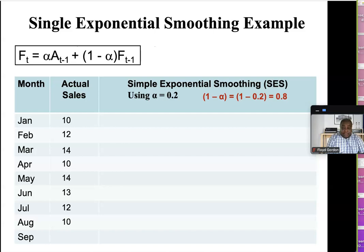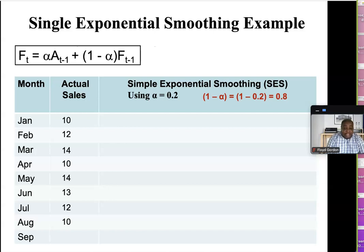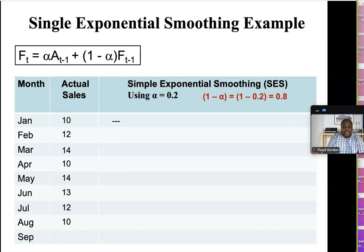For January, to do a forecast we need a previous actual and a previous forecast — that would be the actual result for December and the forecast for December. Since we don't have those figures, we have to skip January. To forecast February, we need the actual for the previous month, which would be the 10 units for January, and we also need the forecast for the previous month, which would be the forecast for January.